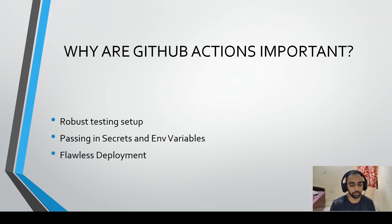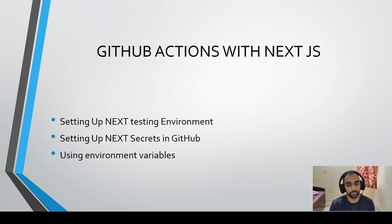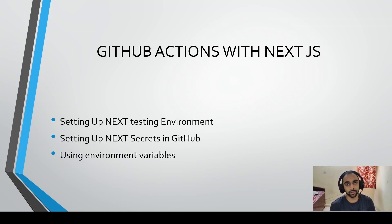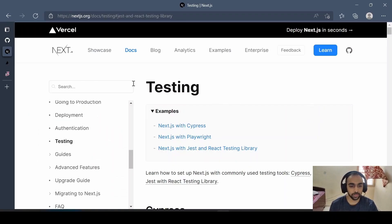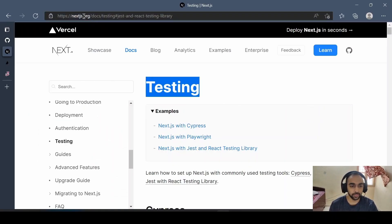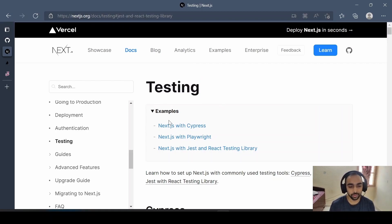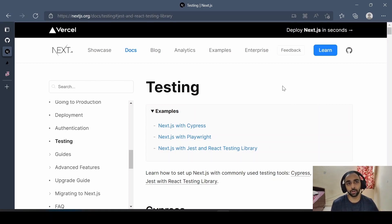In this video we'll see how to set up the testing environment with Next.js. We won't dive too deep because the scope is to understand GitHub Actions CI/CD pipelines, why they're important, and how to use them with Next.js — plus setting up secrets and environment variables. In the Next.js docs you can find all the testing resources: you can test with Cypress, Playwright, or Jest. Cypress and Playwright are mainly for E2E or integration testing.